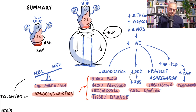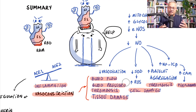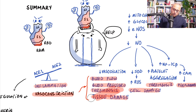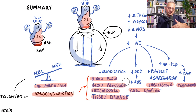Thrombosis also occurs: blood flow becomes sluggish, especially in the veins, and blood starts clotting — particularly in the veins of the legs, especially in women. As nitric oxide is reduced, superoxide dismutase (SOD) enzyme becomes reduced as well — these are coupled. When eNOS works, SOD dismutates superoxides — reactive oxygen species. But when eNOS is reduced because of spike protein, SOD is reduced too, allowing reactive oxygen species to move freely and damage endothelial cells.